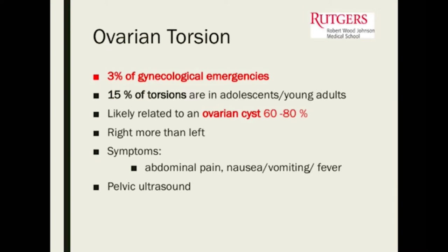Generally speaking about ovarian torsions — they are 3% of gynecologic emergencies. Fifteen percent of torsions occur in adolescent young adults. Ovarian torsions are likely related to ovarian cysts in 60 to 80% of cases. The right side tends to be more common than the left.